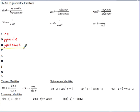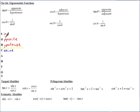Then the C stands for cosine — we abbreviate these with three letters, but this is how they're really spelled out. Cosine is the A for adjacent over the hypotenuse.